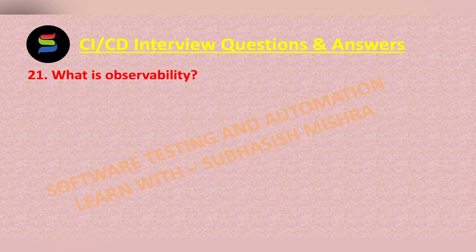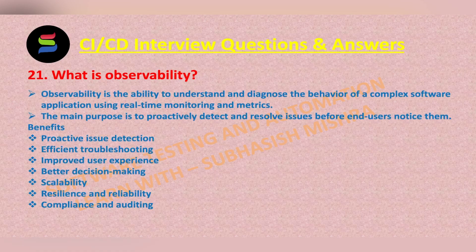What is observability? Observability is the ability to understand and diagnose the behavior of a complex software application using real-time monitoring and metrics. The main purpose is to proactively detect and resolve issues before end-users notice them.